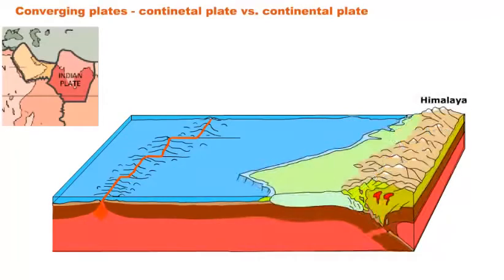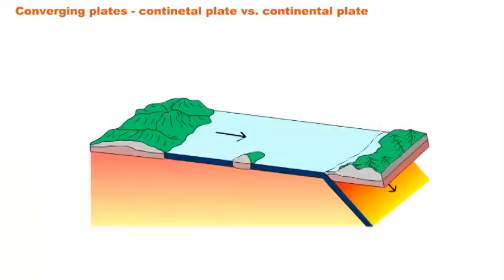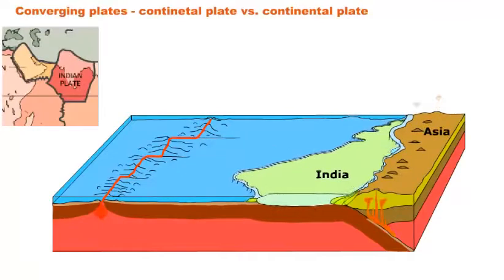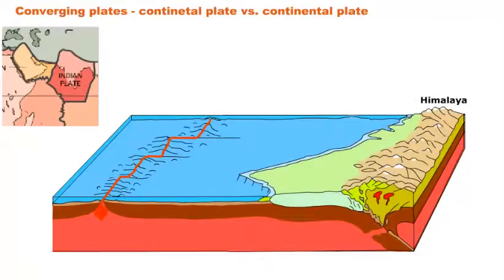We'll see this with India. About 225 million years ago, India was a large island situated off the coast of Australia, separate from Asia in Pangaea. As India broke apart and moved northward, about 40 to 50 million years ago it collided with the Eurasian continent. The northernmost part of the Indian subcontinent was forced below the Eurasian continent, resulting in a thickening of the crust. The Himalayan mountain chain was formed, containing Mount Everest — the tallest mountain in the world.